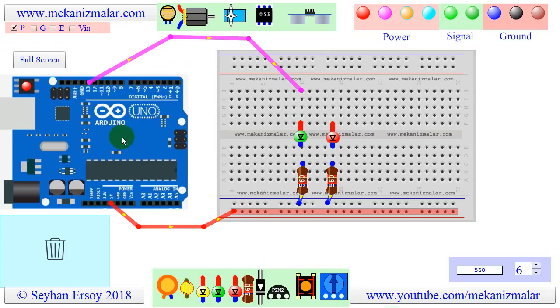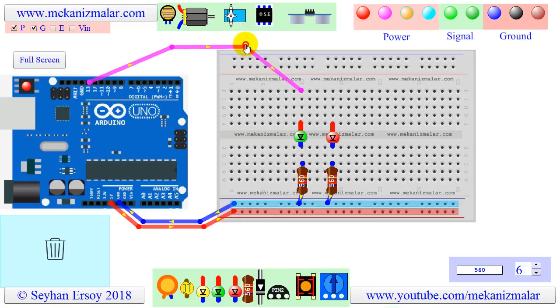Similarly, the ground connection is shown with arrow directions from breadboard to the Arduino. By checking G checkbox, the ground wire becomes visible. Note that in this case, the arrow directions are from breadboard to the Arduino ground connection. When we do the power and the ground connections, we also see the red and blue stripes on the breadboard.